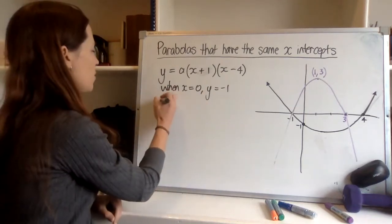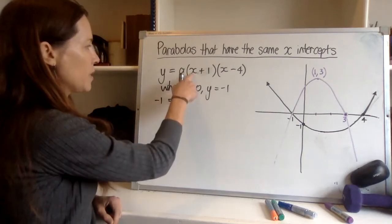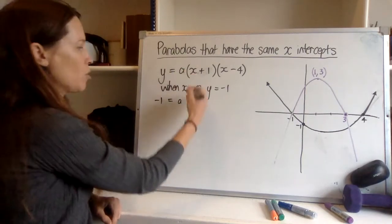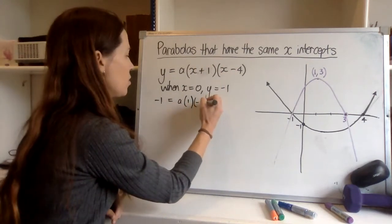So let's sub in y equals negative one. We don't know a yet but we know that x is going to be zero. So if we put zero in here we'll just have one and if we put zero in here we'll just have negative four. Just write them like that. Now I can see that negative four times a is equal to negative one.